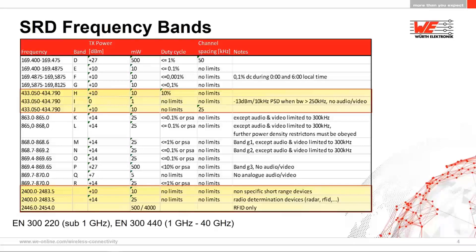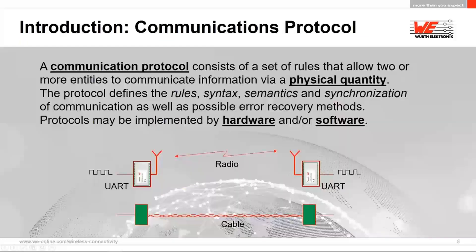These four bands are regulated by the European norm EN 300 220 for sub-1 GHz and EN 300 440 for above 1 GHz up to 40 GHz. In Europe they are regulated by ETSI, in America by the FCC, and in Canada by IC.